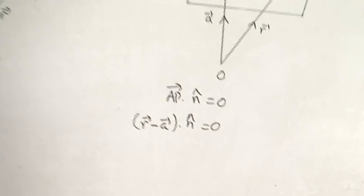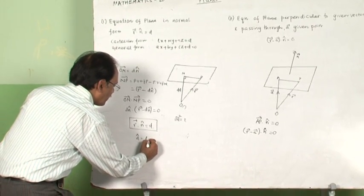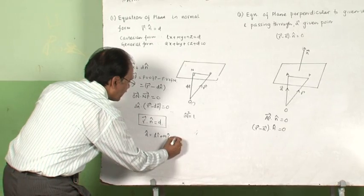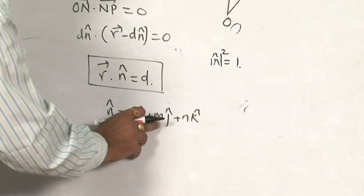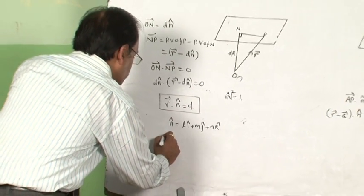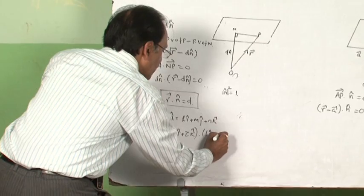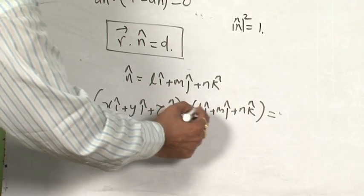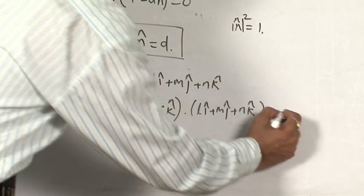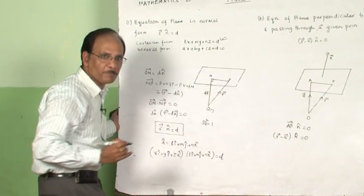The same equations can be developed in Cartesian form. If n̂ equals Li + mj + nk, then L, m, n are the direction cosines. Substituting r as xi + yj + zk and taking the dot product with Li + mj + nk, this equation becomes Lx + my + nz equals d.